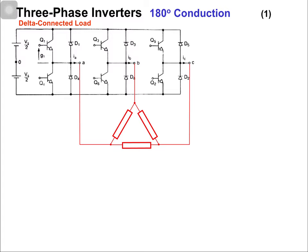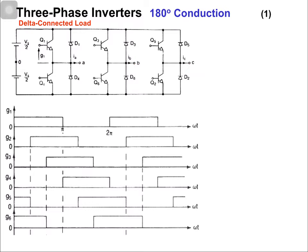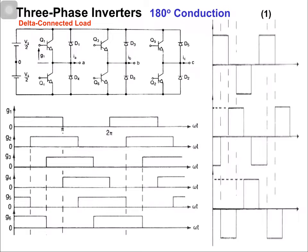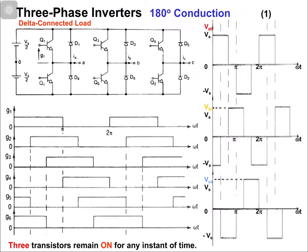The circuit diagram is shown. The gating signals remain the same as already discussed — six gating signals — and at any instant of time three switches out of six will remain in the on state. Now let's draw the output voltage waveform for the delta connected load.